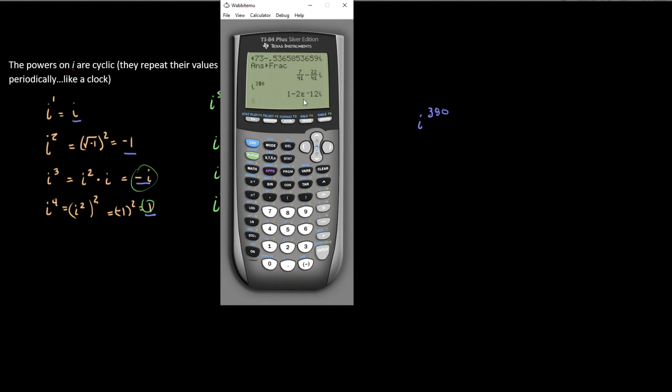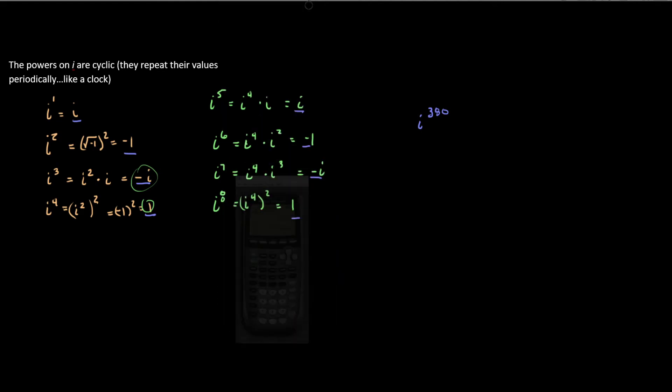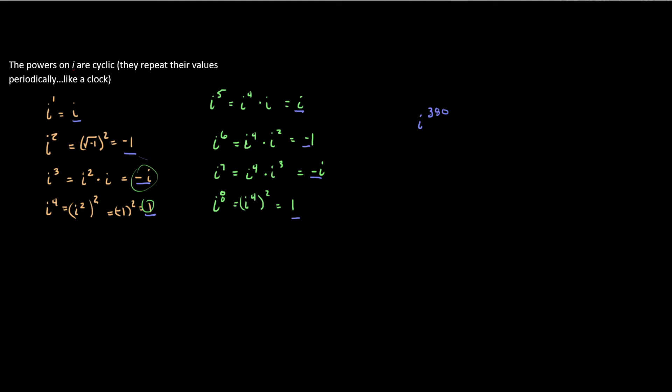So, wow, we got 1 minus something i. Okay. So apparently it's going to be 1 minus something i, but if you look, none of these are 1 minus anything i. Well, that's unique. Okay. Well, let's see if we can reason it out and then find out what's going on with the calculator, because apparently the calculator's snotty.